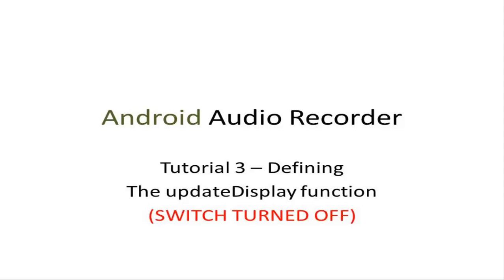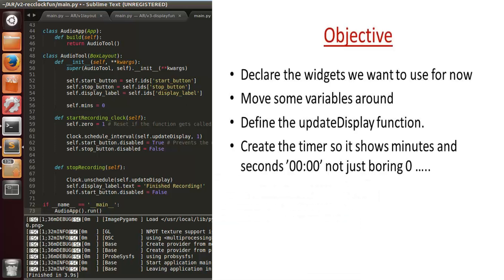Welcome to Android audio recorder tutorial 3, defining the update display functions. The objective is to declare the widgets we want to use, move some variables around, define the update display function, and create a timer so it shows minutes and seconds — not just a boring zero.